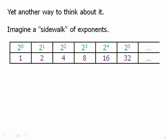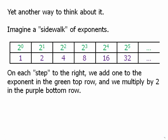Here's another way to think about it. It's good to have as many ways to think about this as possible because it's a somewhat anti-intuitive idea. Imagine a sidewalk of exponents. Notice that every number on the top equals the power on the top equals the output on the bottom. As we move to the right, we add 1 to the exponent in the green row at the top and we multiply by a factor of 2 in the bottom row. Each step to the right we're multiplying by 2.